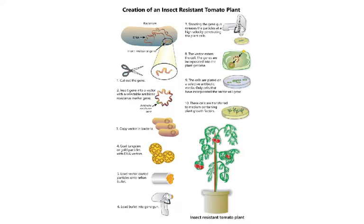This is a bacteria DNA insect-resistant gene. We cut out the gene and insert it into a vector with a selectable antibiotic-resistant marker gene. We then copy the vector in bacteria, coat tungsten particles with DNA vectors, load the coated particles onto a Teflon bullet and load the bullet into a gene gun. Shooting the gene gun releases the particles at high velocity, penetrating the plant cells so the vector enters a cell and the genes are incorporated into the plant genome. Cells are plated on a selective antibiotic medium; only cells that have incorporated the vector will grow, and these give us an insect-resistant tomato plant.